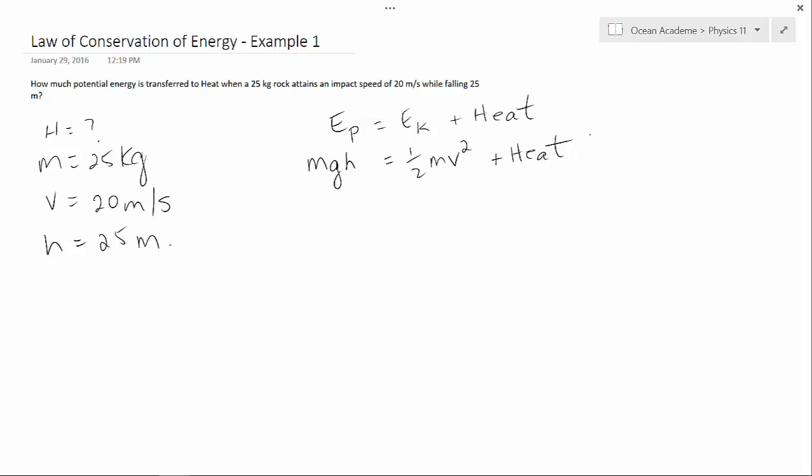Filling this in we get 25 times our gravity is 9.8 times our height which is 25 equals 0.5 times our mass times our velocity squared plus heat.